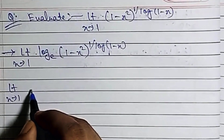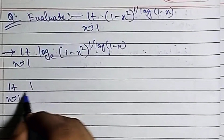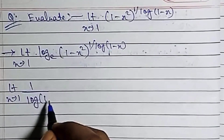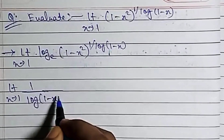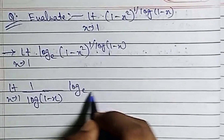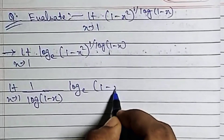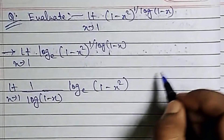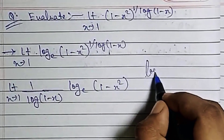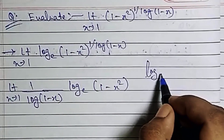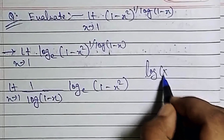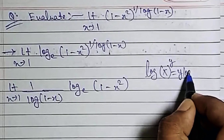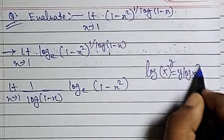The first part is 1 by log(1-x). Then you will see the first part of the third part. This is the second part — log is y, so y log is y.